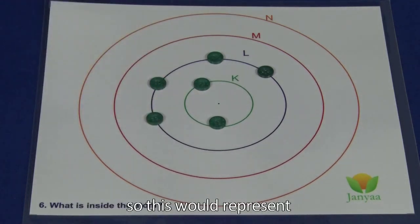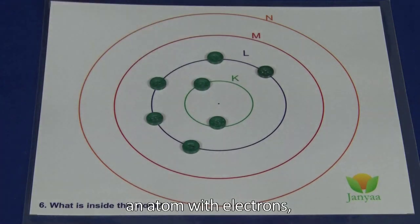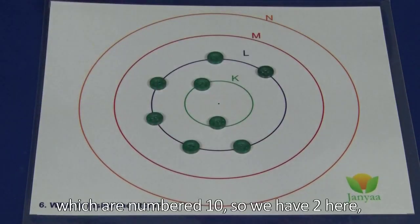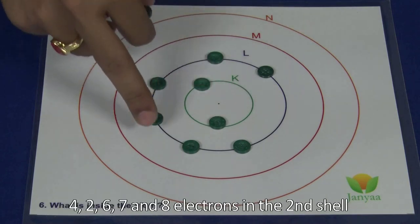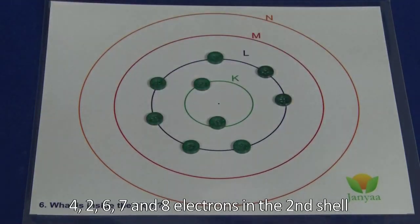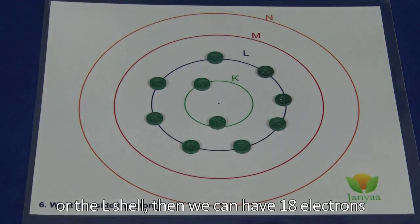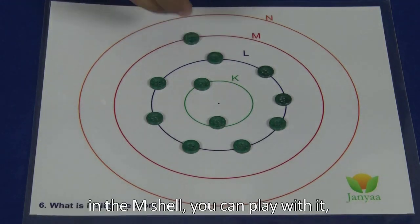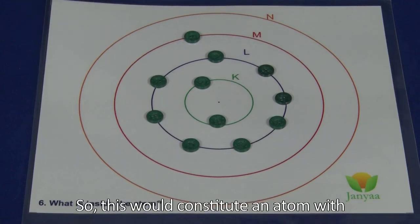This would represent an atom with electrons which are numbered 10. So we have two here and four to six, seven, and eight electrons in the second shell or the L shell. Then we can have 18 electrons in the M shell, and you can play with it. So this would constitute an atom with the total number of electrons is 11.